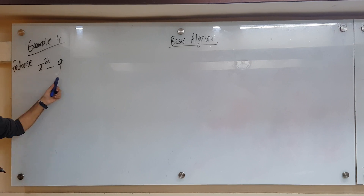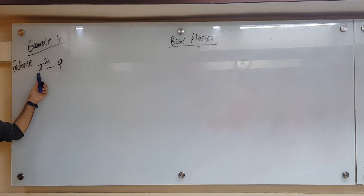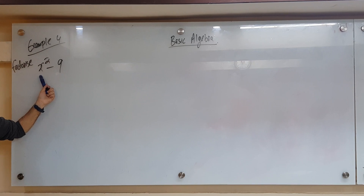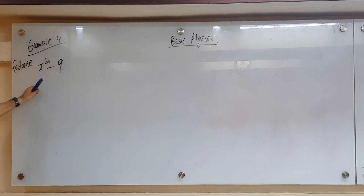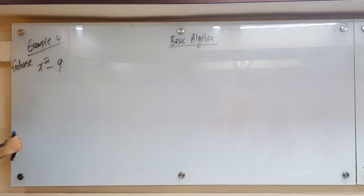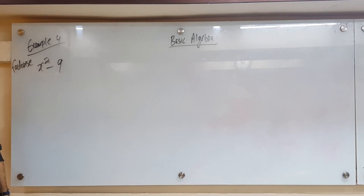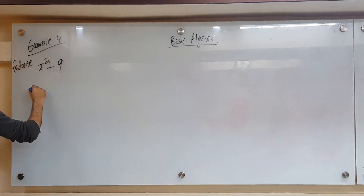x squared and 9 — we are factorizing. Listen, this is always coming. This is a question that will come in grade 9, 10, and 11. x squared and 9 are two perfect squares, agreed? So do you see two perfect squares with a minus sign in between? Is 9 not a perfect square? No — 3 squared is.